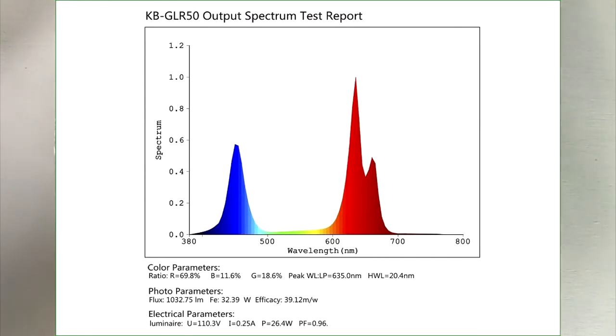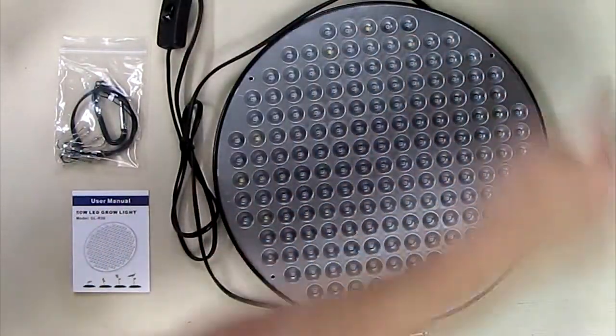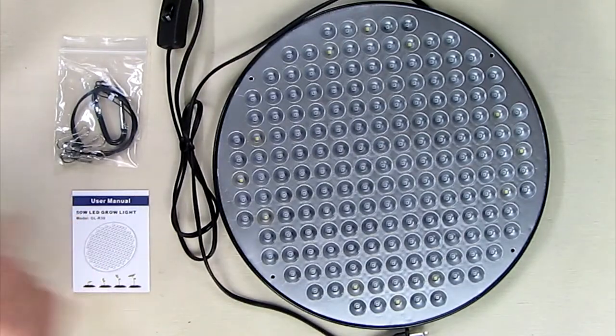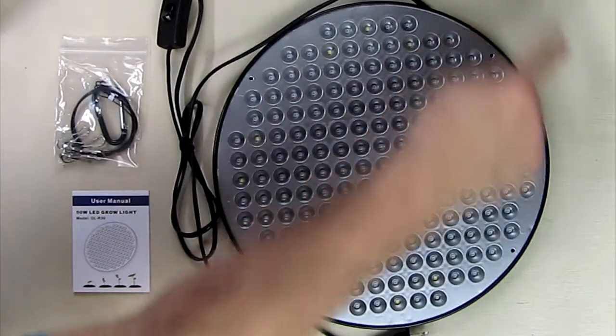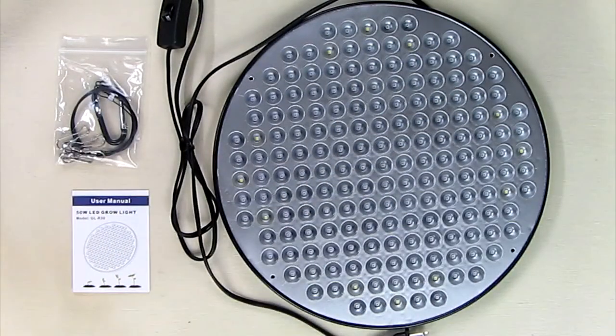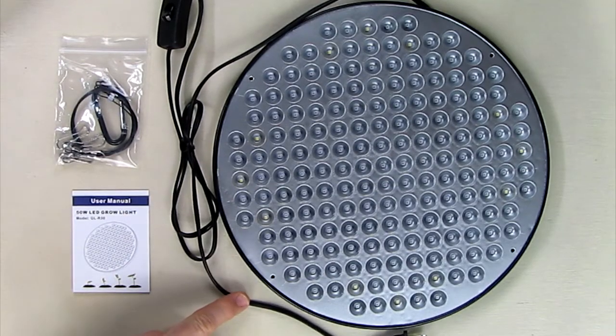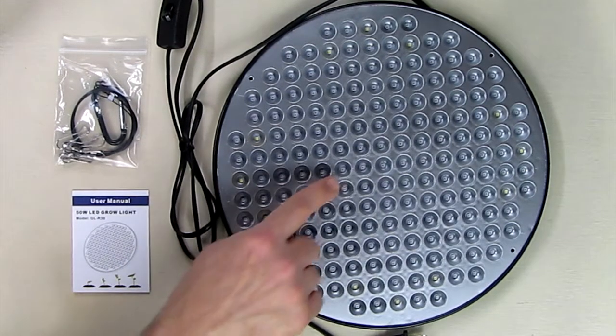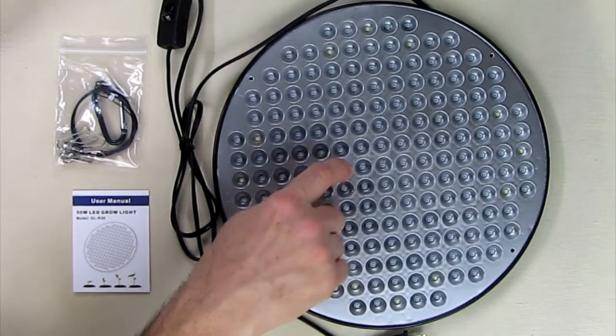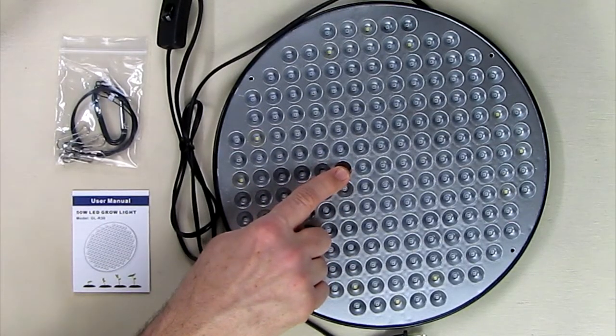Your growing area would be like the area right here, and up to two feet by two feet growing area. The cord, by the way, is five feet—I said it was six feet, it's five feet. They have individual 60-degree reflectors on each LED to concentrate the light down.